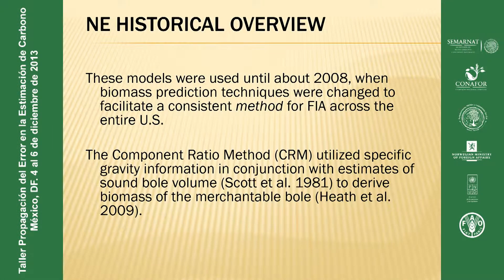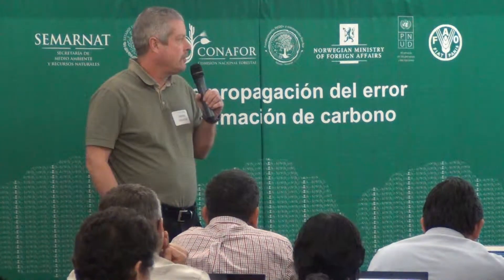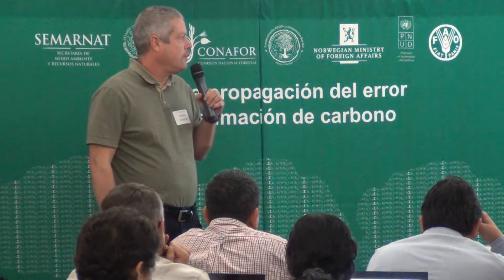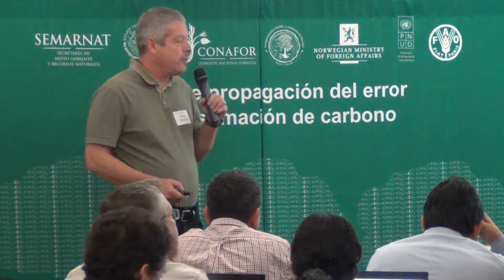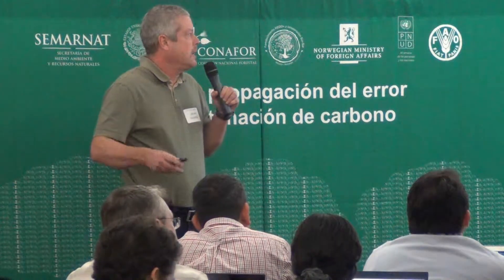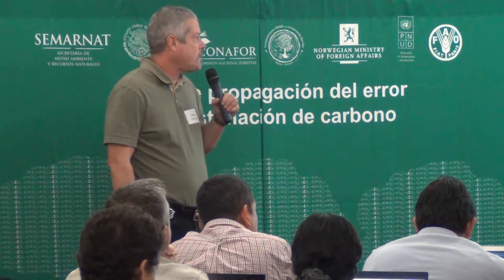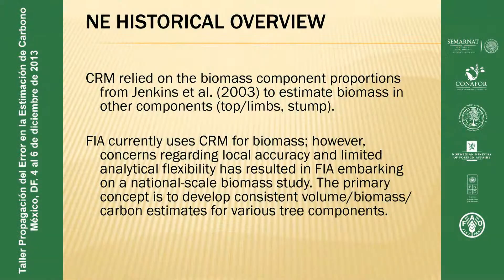Then there was a desire to have a consistent method across the country for FIA to estimate biomass. The basic underlying method in the Component Ratio Method is that you generate a volume for the tree - essentially the merchantable bole - and then convert that to biomass. You then take the proportions from the Jenkins et al. publication to develop estimates of biomass in other parts of the tree, such as tops, limbs, and stump. We currently use CRM for biomass, but there have been some concerns about accuracy and analytical flexibility.